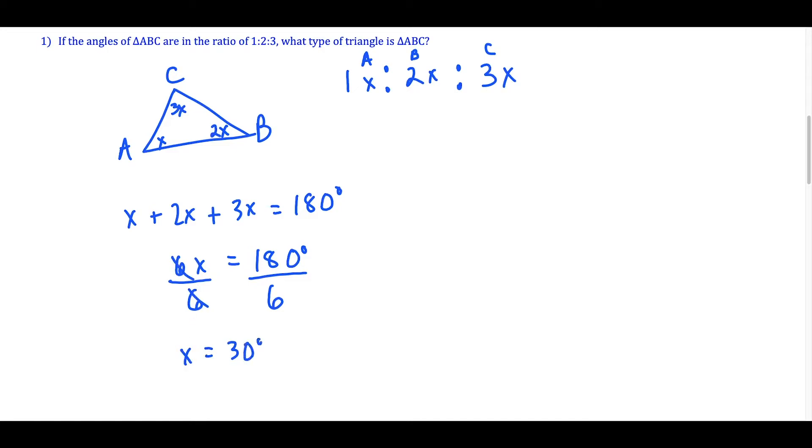From here I just have to plug everything back in. If I want to know the actual measures of each angle, for A, if I plug in X equals 30, I have 30 degrees for A. B is 2 times 30, so I get 60 degrees. And for C, 3 times 30 is 90 degrees. So this is a right triangle because it has a right angle, 90 degrees.